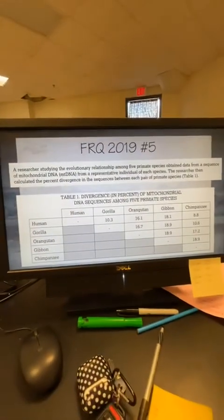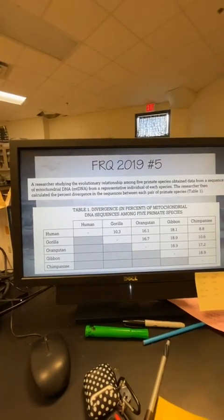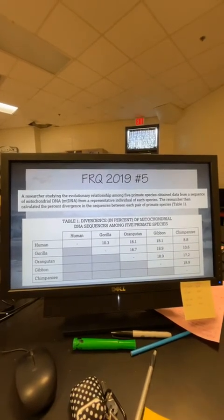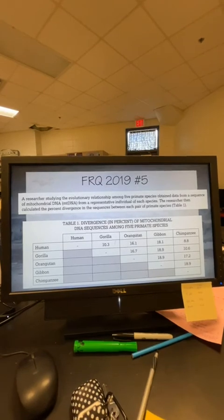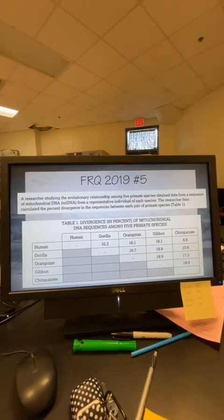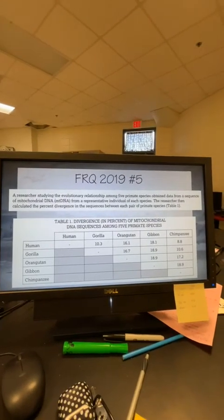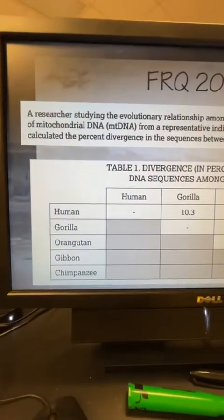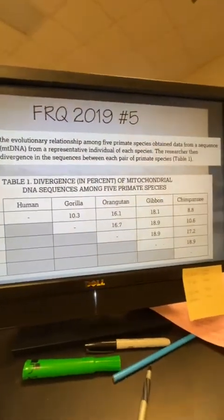That first FRQ we're going to do is the short one. It is 2019 number five. It says researchers studying evolutionary relationships among five primate species, obtaining data from a sequence of mitochondrial DNA — mtDNA — from a respective individual of each species. The researcher then calculated the percent divergence in the sequences between each pair of primate species in Table 1. You can see we've got the human, the gorilla, the orangutan, the gibbon, and the chimpanzee, and you can kind of see how they are related to each other.